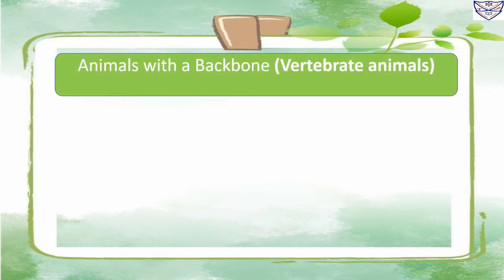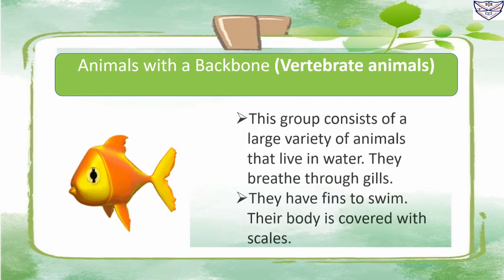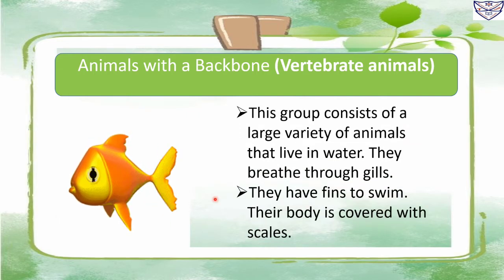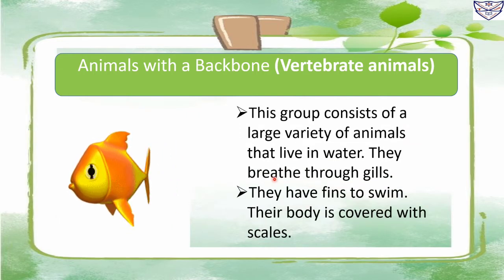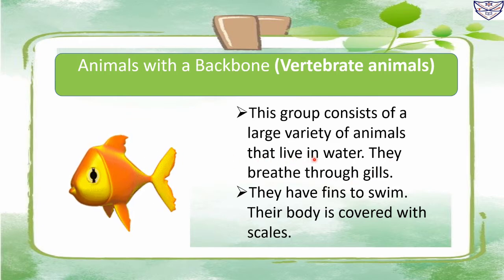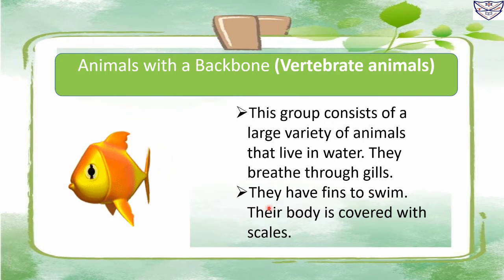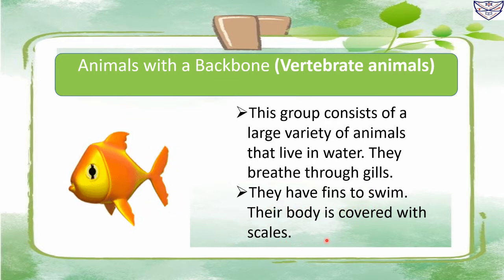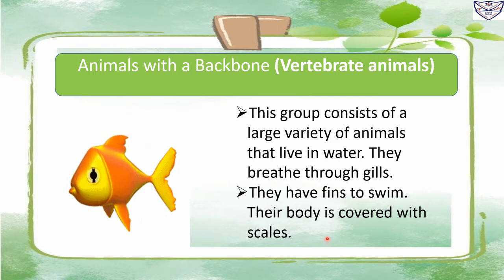Animals that have a backbone are called vertebrates. They can be divided into smaller groups. Fish: this group consists of a large variety of animals that live in water. They breathe through gills, have fins to swim, and their body is covered with scales. Examples include mackerel, shark, and cod.